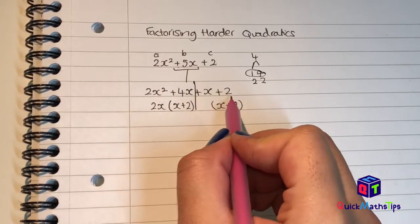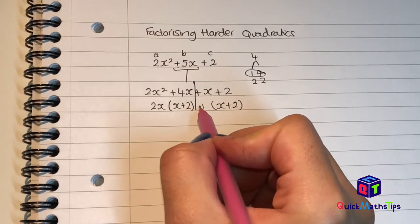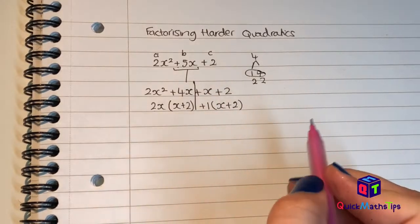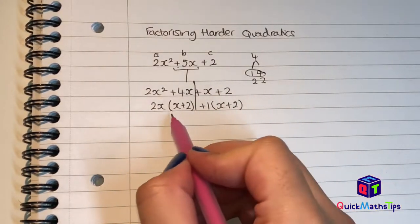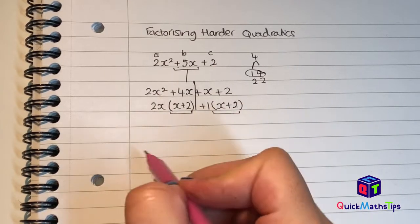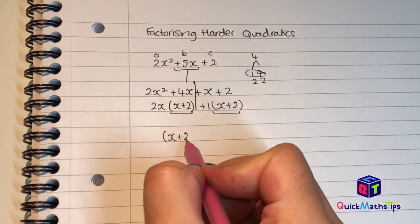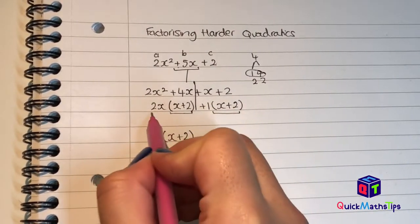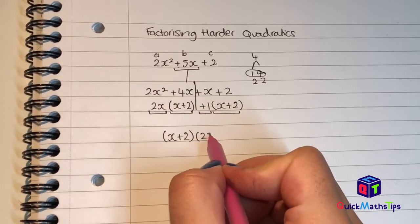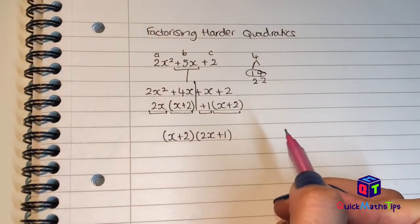If I do x + 2 divided by x + 2, I'm left with plus 1, so I'm going to have plus 1 on the outside. My final two brackets are going to be the repeated bracket — the one that came twice, which is x + 2 — and the stuff on the outside, which is 2x + 1. So on this side I'm going to have 2x + 1.